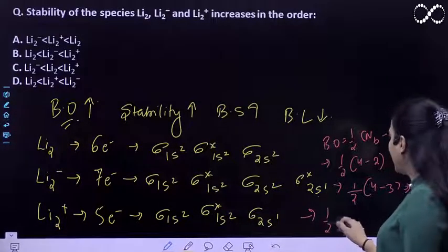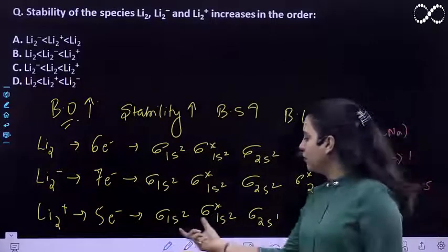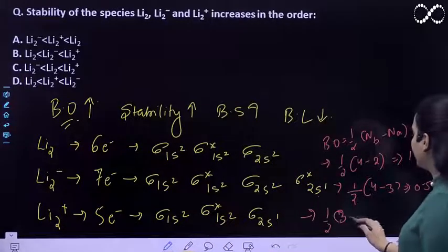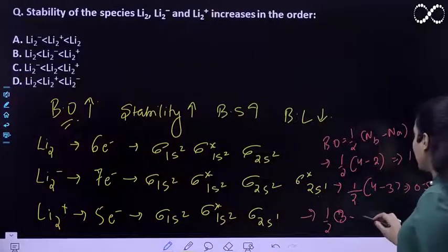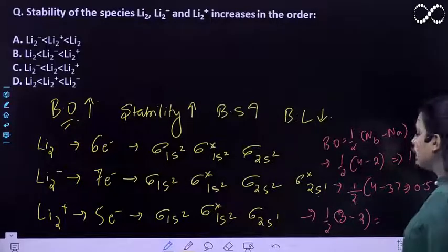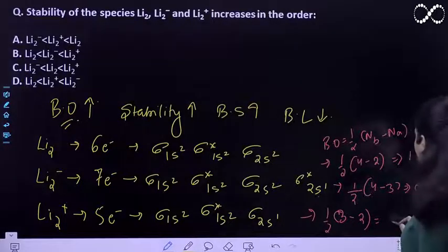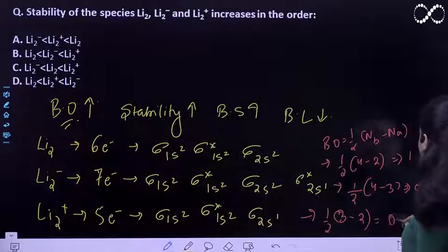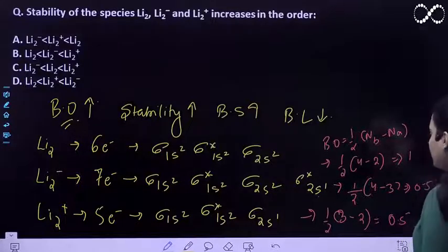If we talk about here, it's half of—now here in bonding you have 3 electrons, 3 minus 2, then it is again 1/2, that is 0.5.